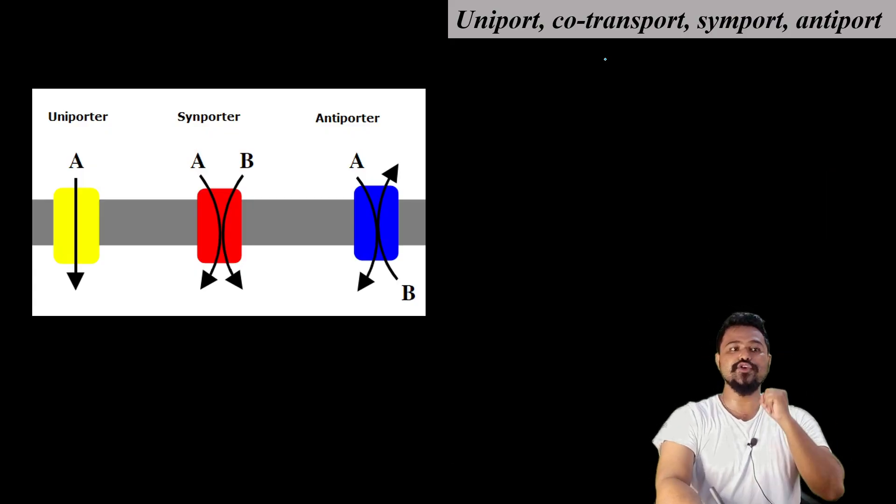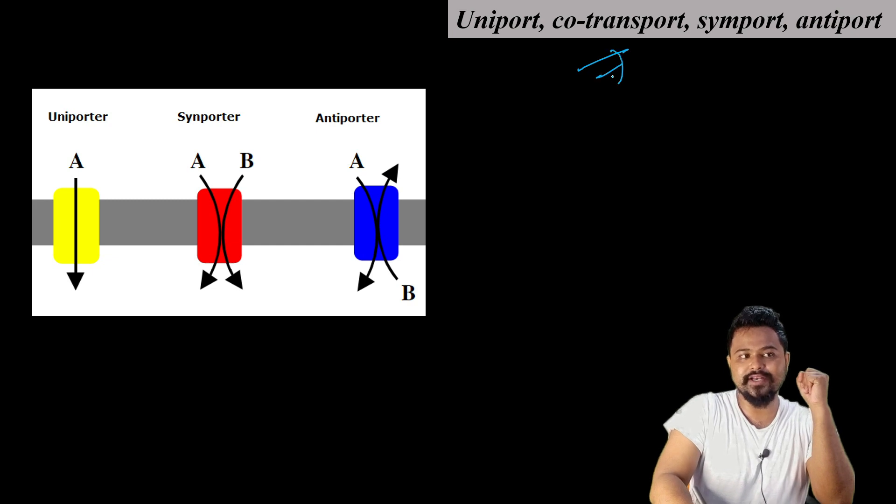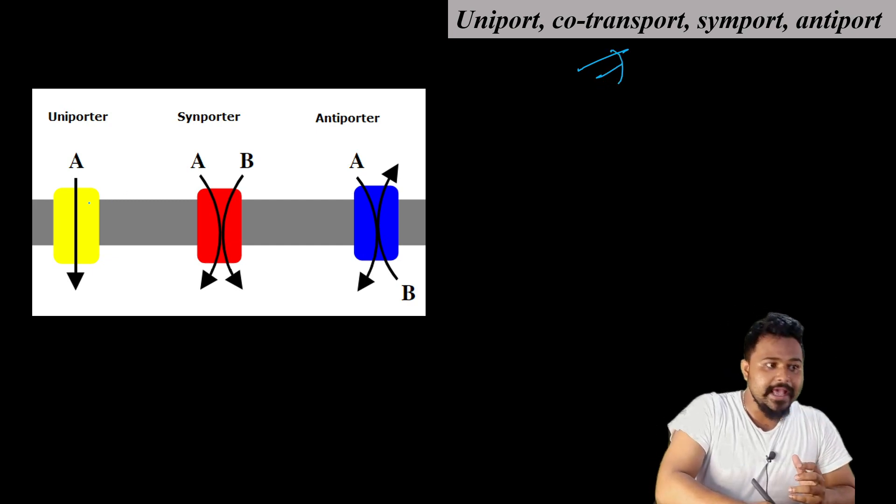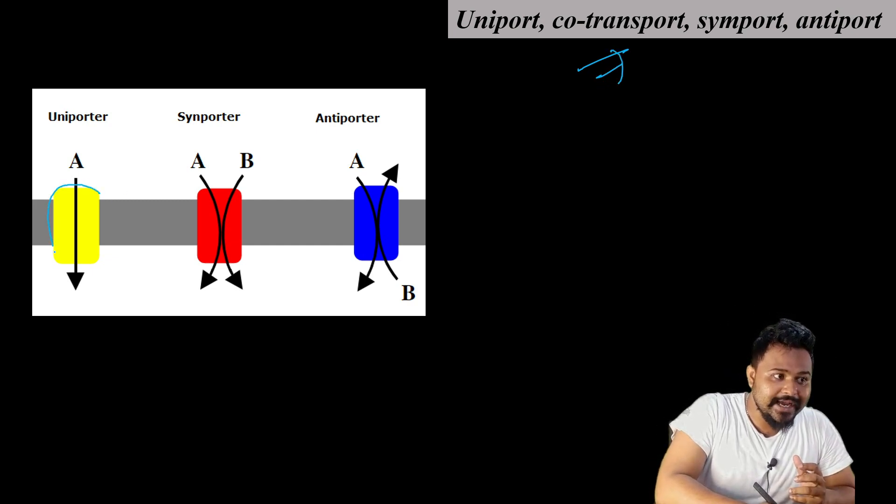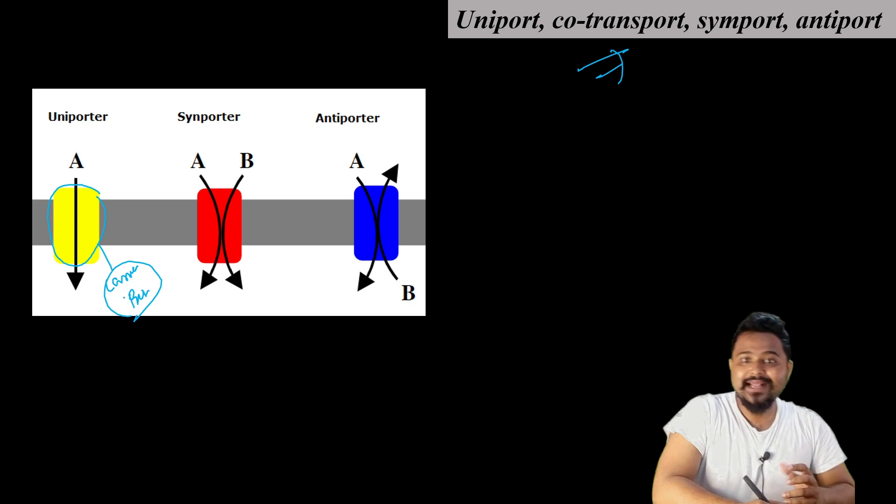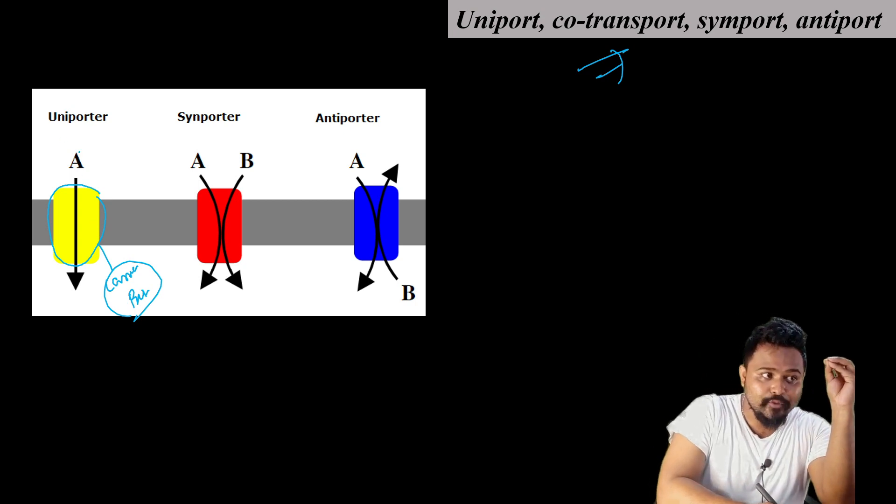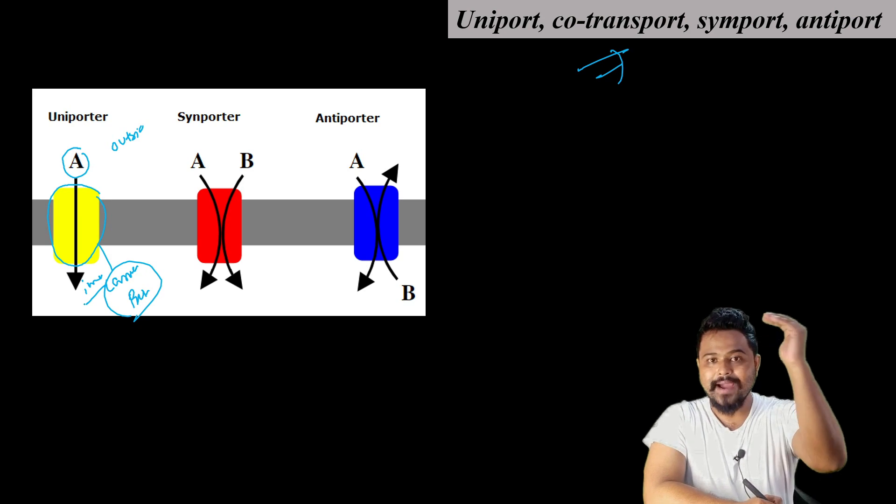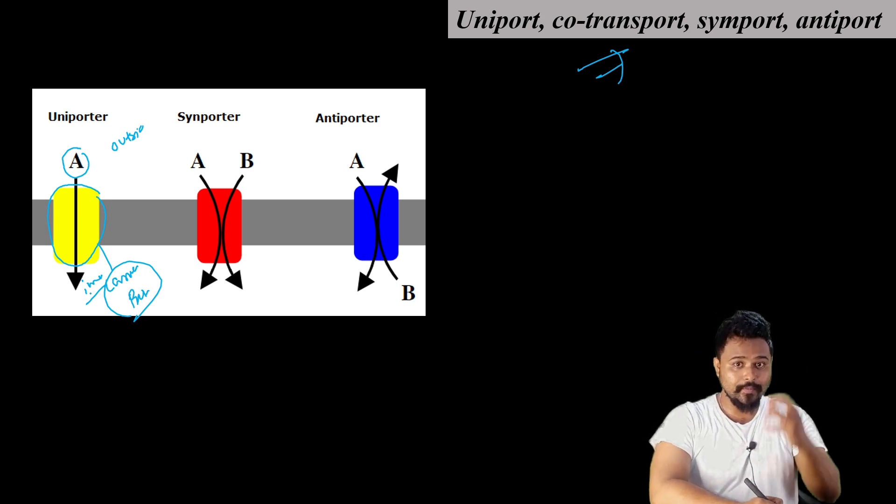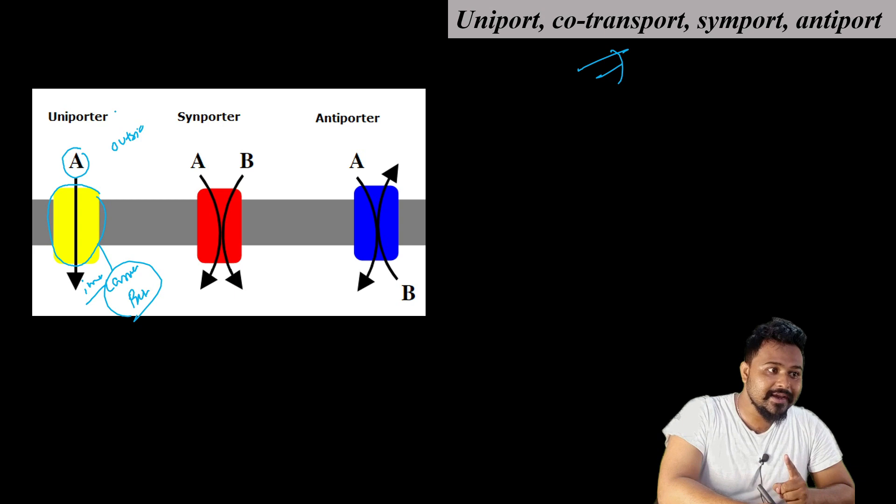Finally, let me explain uniport, co-transport, symport, and antiport. Uniport means that a carrier protein transports only one type of molecule. The carrier protein moves this molecule from outside to inside, transporting only this one molecule at a time.